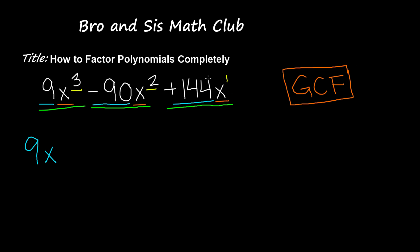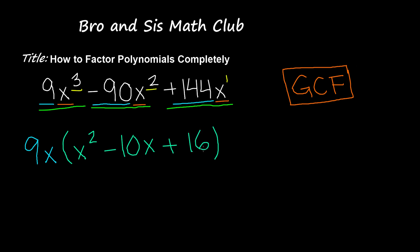So the greatest common factor is going to be 9x. Once you have the greatest common factor, you're going to rewrite the trinomial in parentheses with the GCF divided out of each term. So from 9x cubed we get x squared, from negative 90x squared we get negative 10x, and from positive 144x we get positive 16.